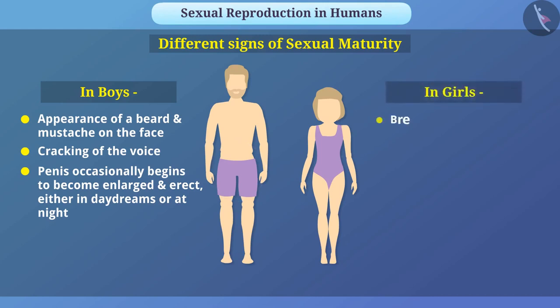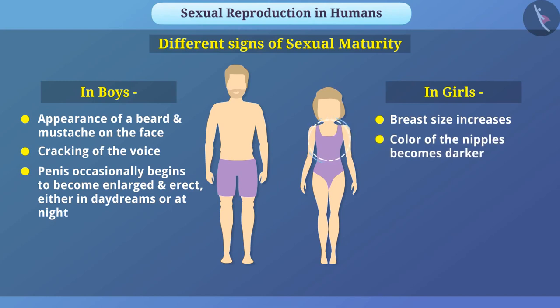Similarly, in girls, the breast size increases, the colour of the nipples becomes darker, and girls begin to menstruate.